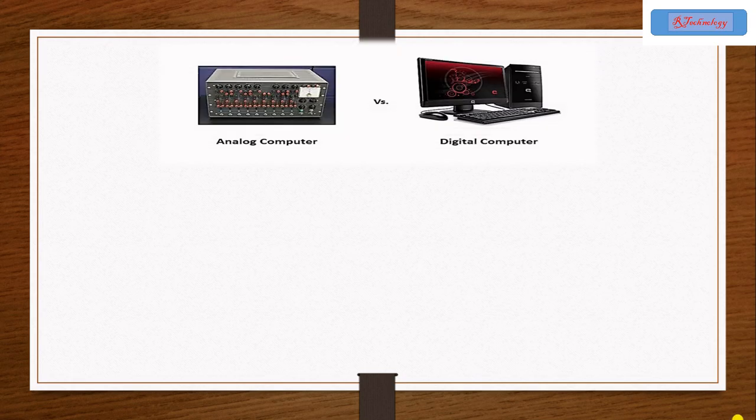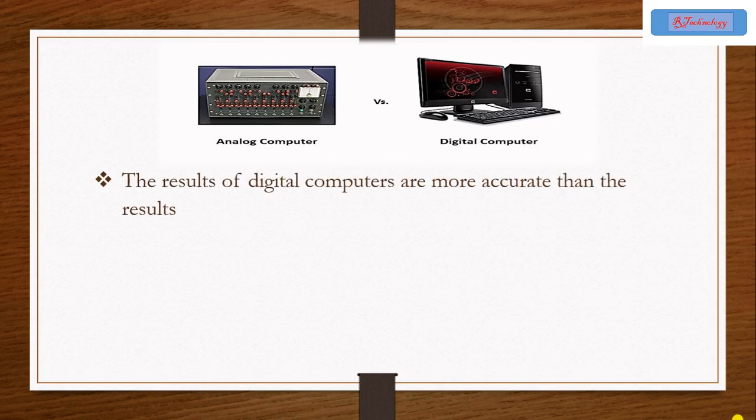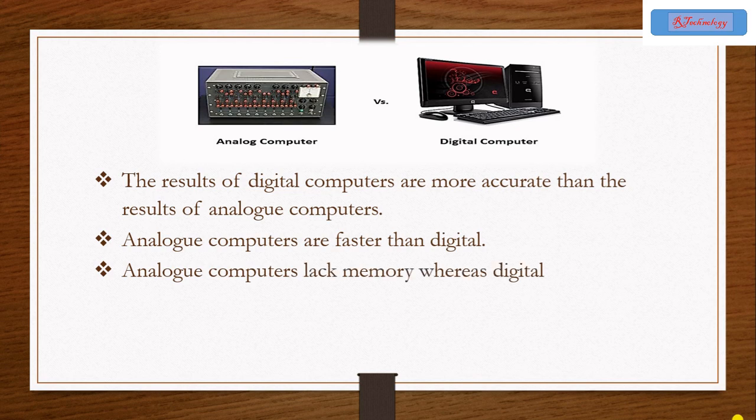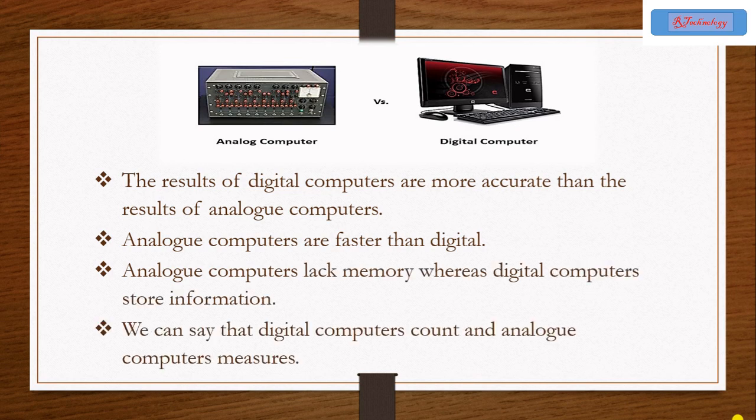Now we are going to quickly compare analog and digital computers. The result of digital computers are more accurate than the result of analog computers. Analog computers are faster than digital computers.